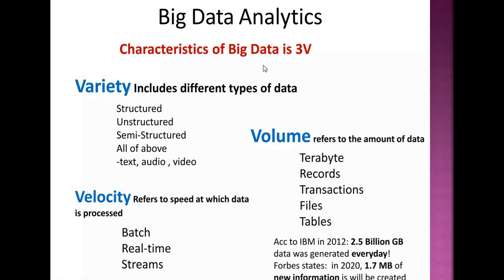Big data is characterized by three Vs. Variety includes different types of data: structured data, unstructured data, semi-structured data, text, audio, and more. Volume refers to the size of the data — terabytes of records, transactions, files, and tables. Velocity refers to the speed at which data is processed: batch time and real-time streams. 2.5 exabytes of data can be generated every day.